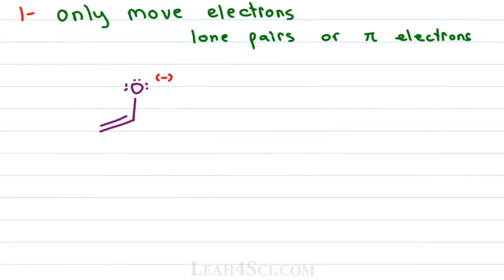Here's the enolate ion we looked at in video one. For this ion, we can move the lone pair of electrons on oxygen down towards the pi bond, and we can also move the pi bond electrons between the two carbon atoms to collapse them onto carbon. So we're moving a lone pair and we're moving pi electrons. When we draw the resulting resonance structure, the skeleton stays the same — the atoms are in the same place, the sigma bonds haven't moved. The only thing that's different is the lone pair on oxygen is now a pi bond between carbon and oxygen, and the pi bond between the two carbon atoms is now a lone pair on the oxygen atom.